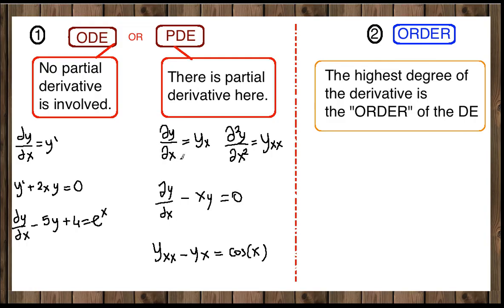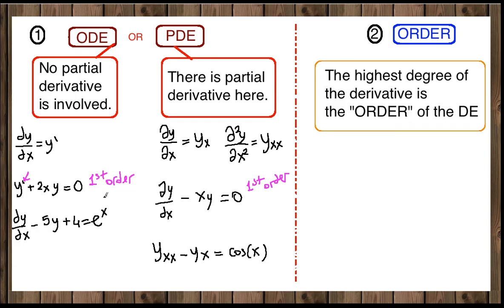We can distinguish ordinary and partial differential equations by looking at whether there is a partial derivative inside or not, and partial derivatives are written with the curvy d or sub-notation. Moving to the order of a differential equation: the highest degree of the derivative in the equation defines the order. For example, if the highest derivative is degree 1, this is a first order differential equation. The earlier example is a first order ordinary differential equation.